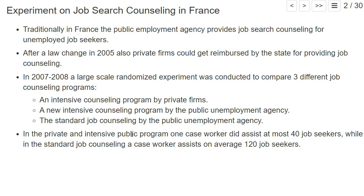In the private and public intensive programs, one caseworker assisted at most 40 job seekers at a time, while in the standard job counseling a caseworker assisted on average 120 job seekers — so they had much less time for every job seeker than in the intensive counseling program.